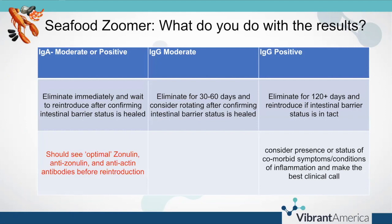For the seafood zoomer, the same situation applies as with the corn and soy zoomers. IgA moderate or positive — you would want to eliminate those foods right away and confirm the intestinal barrier is healed before reintroducing any of them. For IgG moderate and IgG positive results, it's going to be based on your clinical assessment of where the patient is and how reactive they are. With Anisakis simplex antibodies present, best practice is for the patient to definitely avoid raw or undercooked seafood, and perhaps also avoid seafood for three to six months depending on which type of antibodies and how elevated they are.